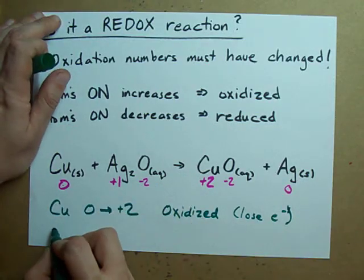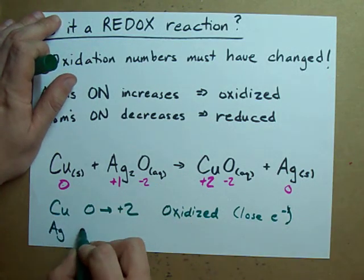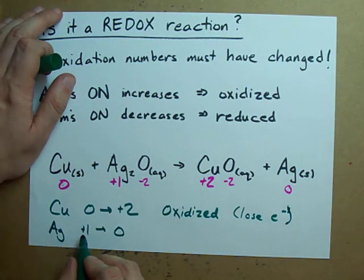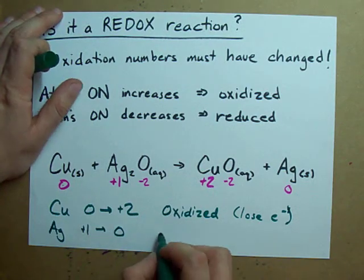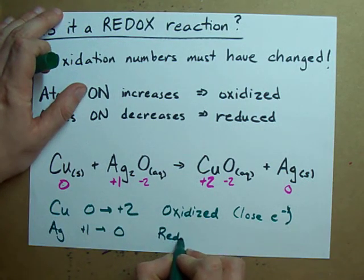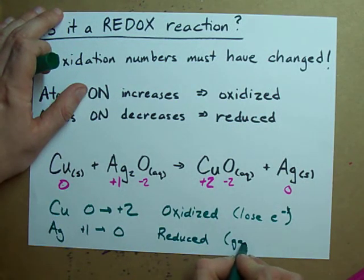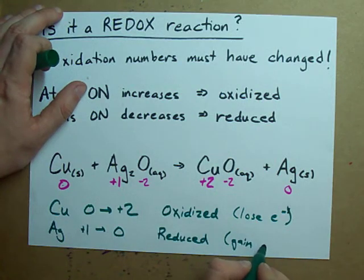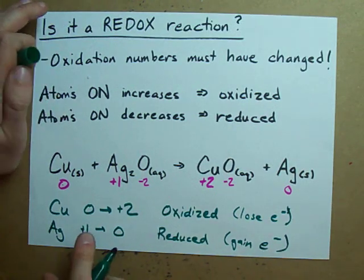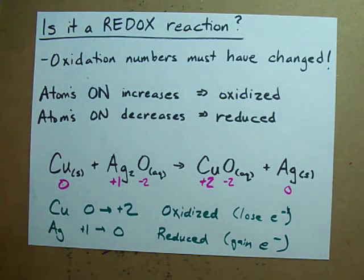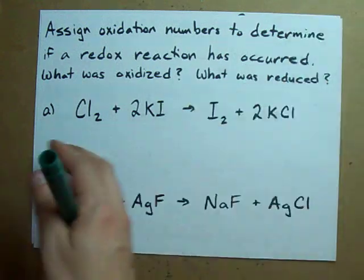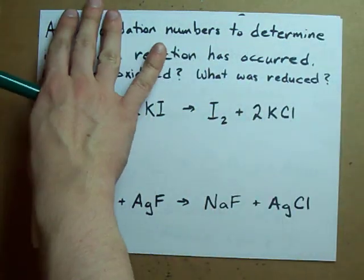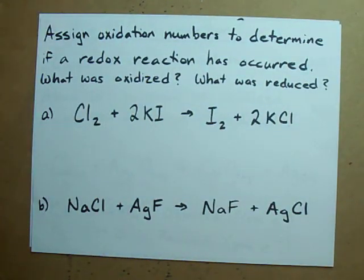Silver went from plus one down to zero — it decreased, so silver is the thing that was reduced. If you went from a positive down to zero, you must have gained electrons. A typical question you'll see is: assign oxidation numbers to determine if a redox reaction has occurred — what was oxidized and what was reduced?